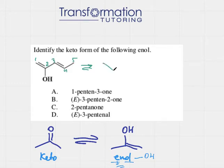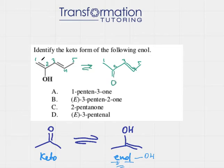I have five carbons: one, two, three, four, and five. This double bond I will not touch — it's not part of the enol. But here I had OH, so I will make it into a double bond O. This double bond next to the carbon with OH becomes a single bond, because going from enol to keto form, my OH becomes a double bond O and the double bond next to that carbon disappears.